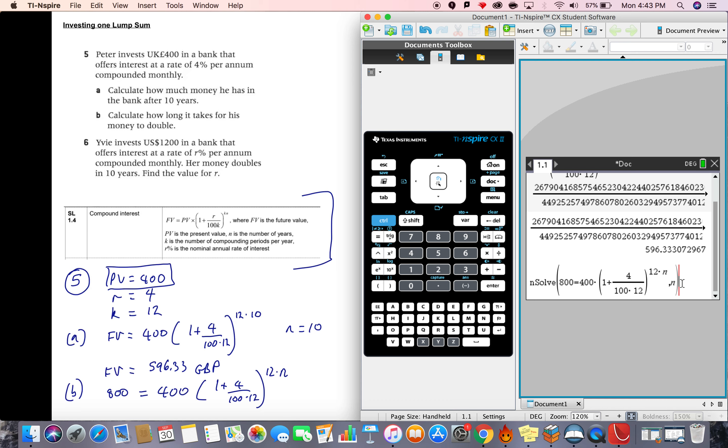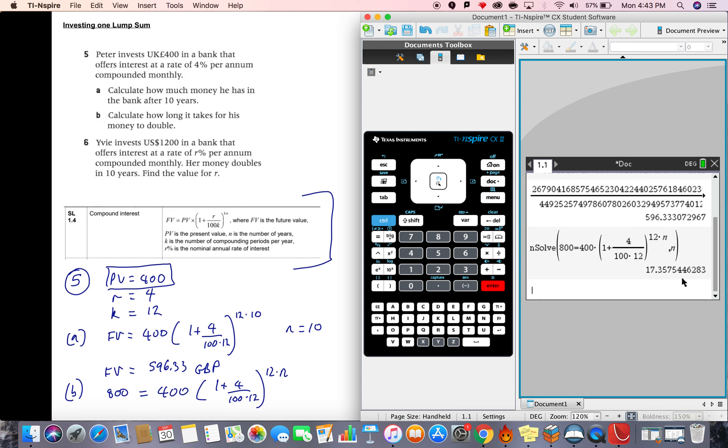Okay, so it's 1 plus 4 over 100 times 12, which is in a bracket, all to the power of 12n. And there we've got n. So here we've got a value for n. Now remember, n represents in the formula the number of years. So here we've got n is equal to 17.4 years, and that's to three significant figures.